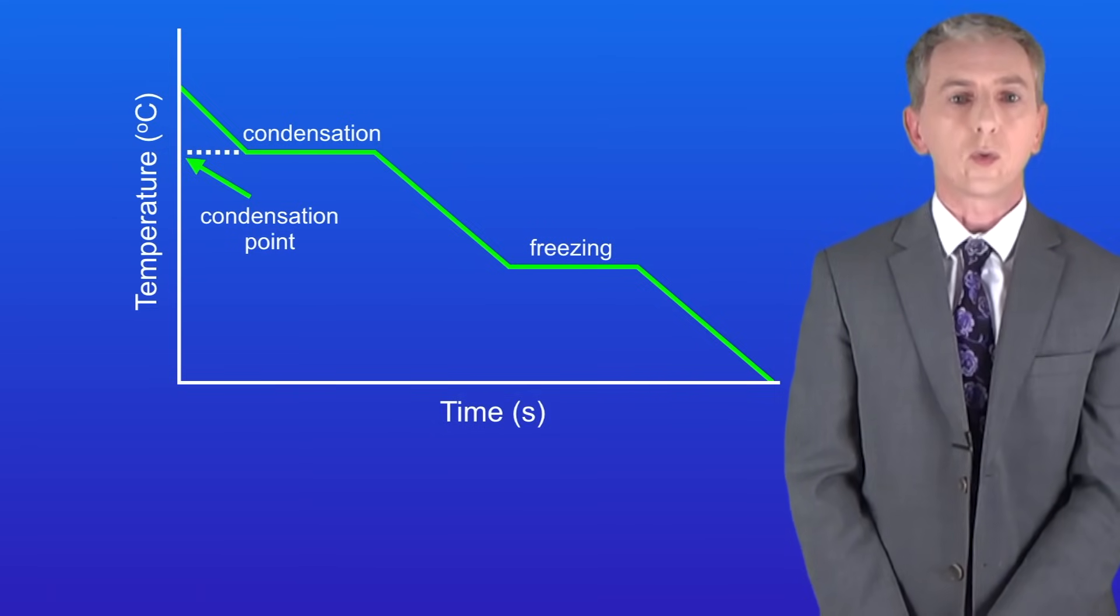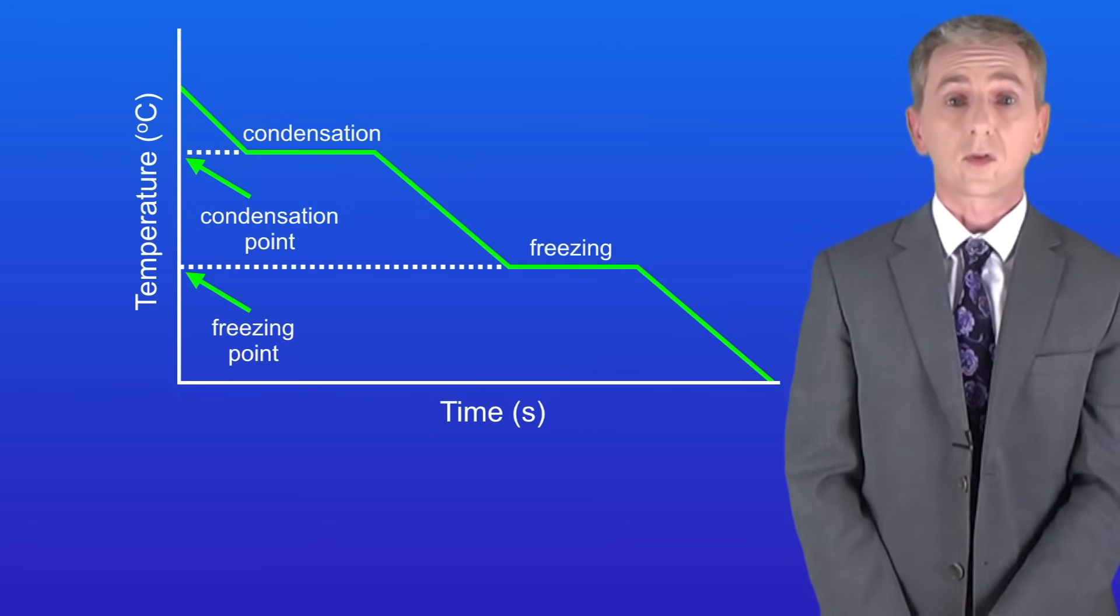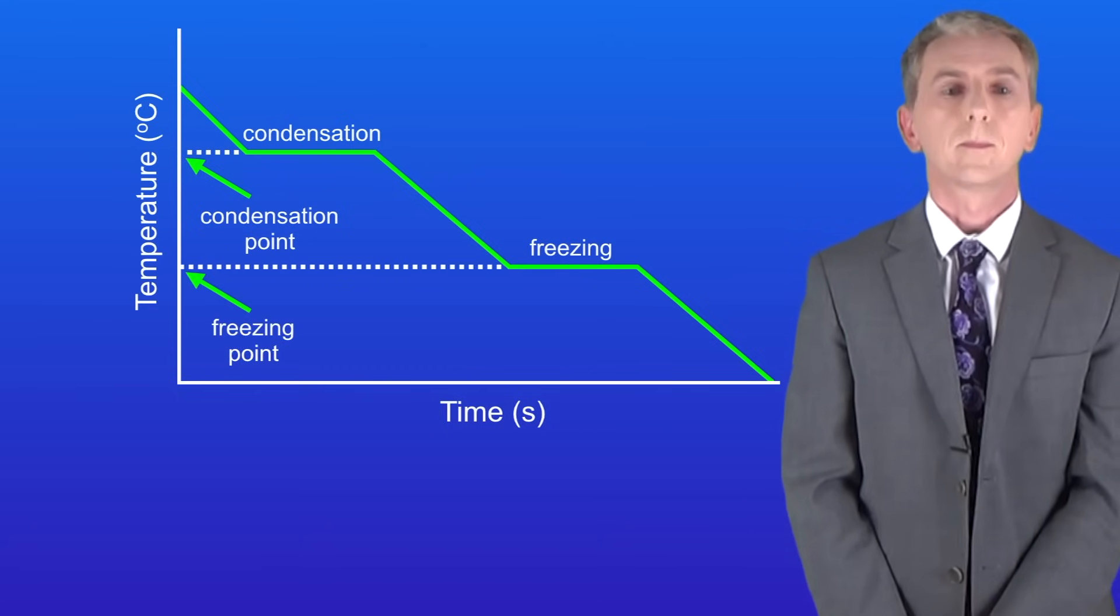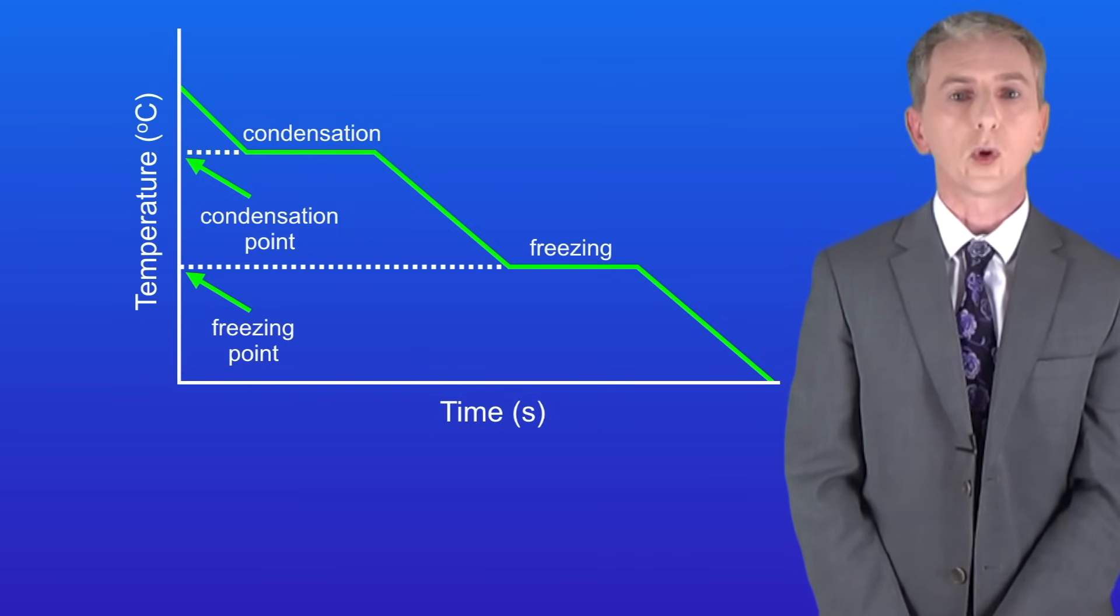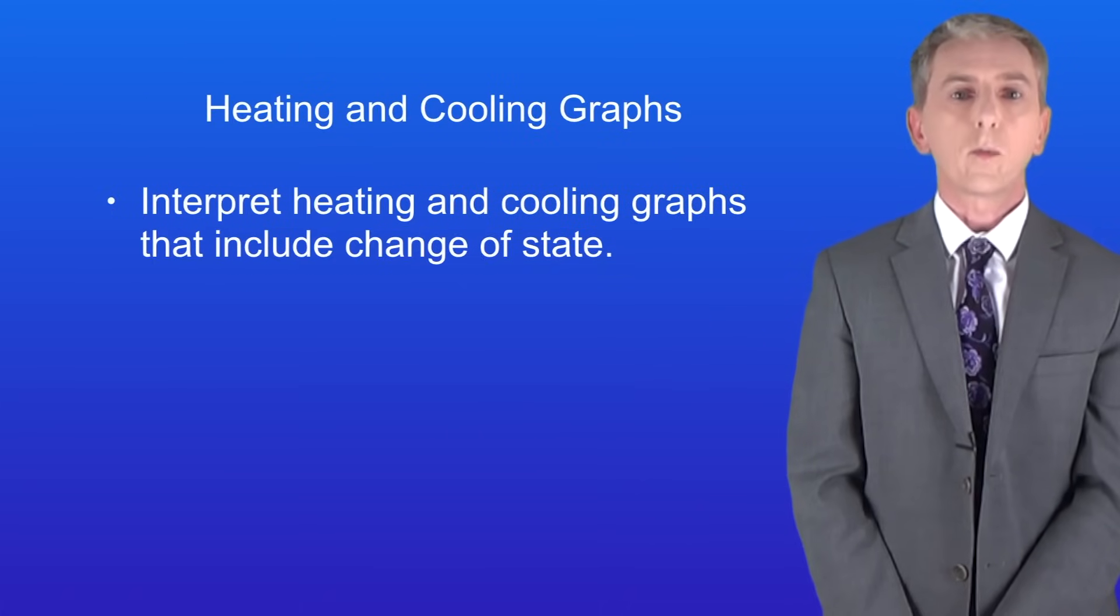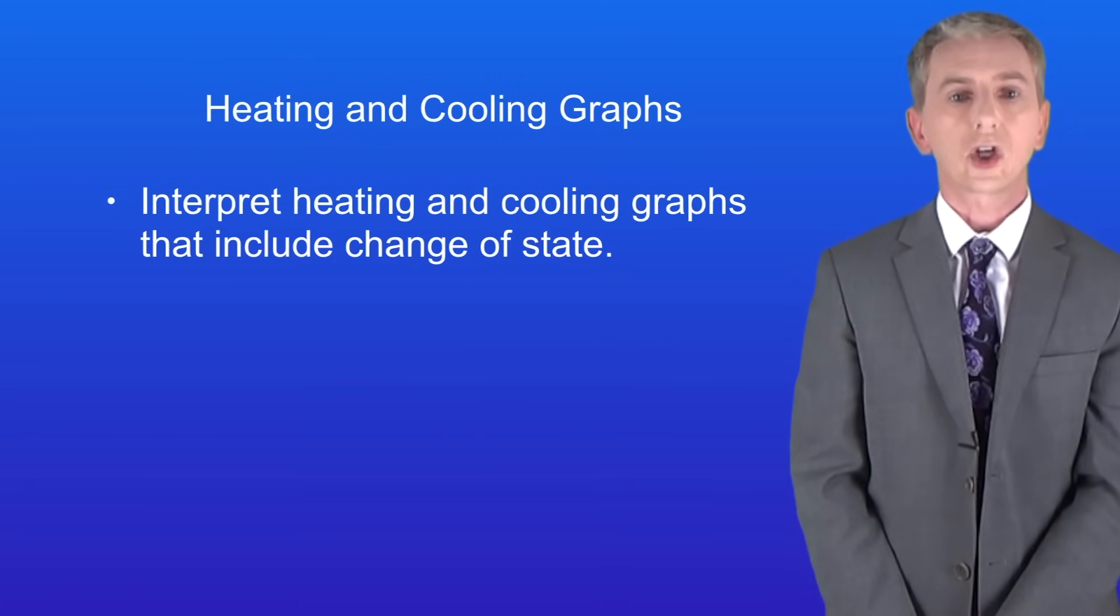When the gas changes to a liquid this is called condensation and when the liquid changes to a solid this is called freezing. Remember that you'll find plenty of questions on heating and cooling graphs in my revision workbook and you can get that by clicking on the link above. Hopefully now you should be able to interpret heating and cooling graphs that include change of state.